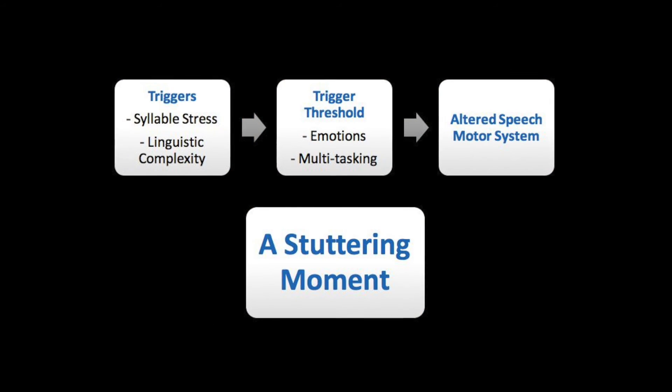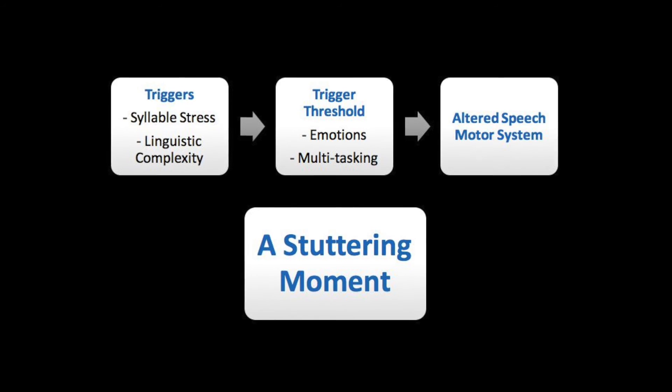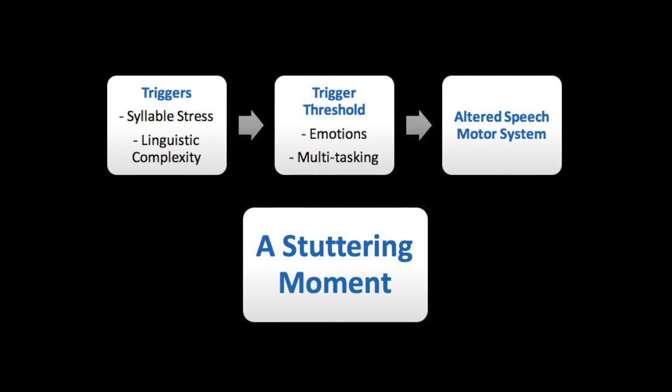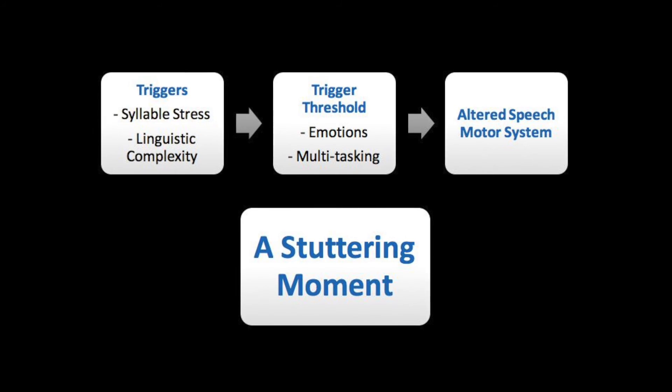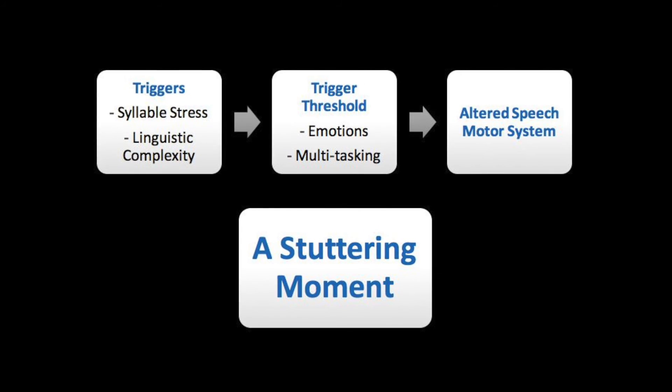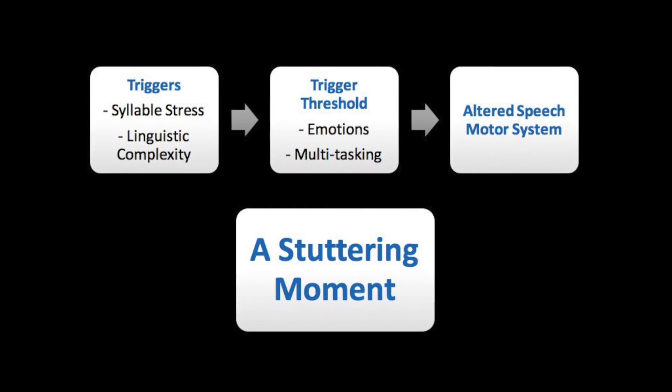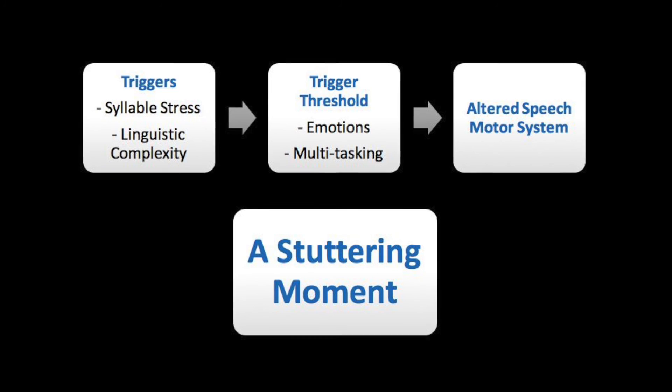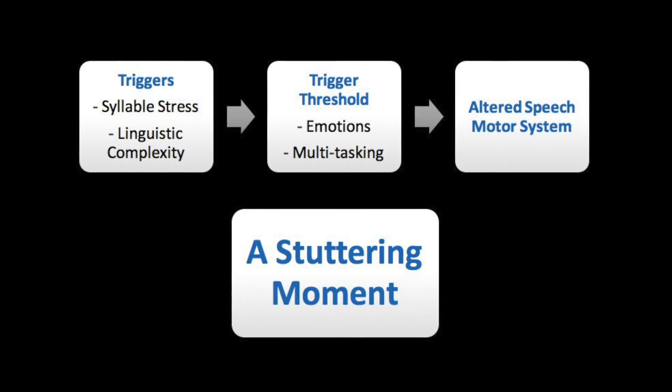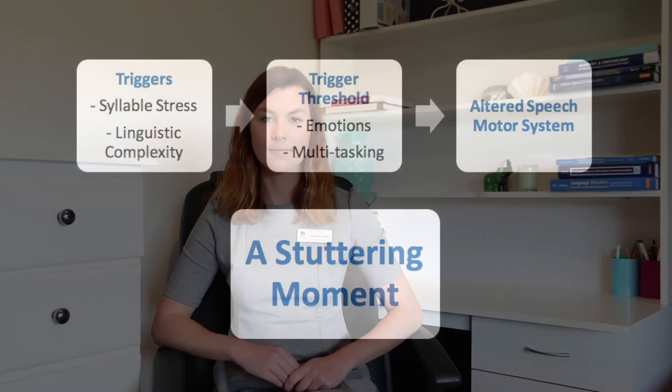To sum it all up, this model states that for a stuttering moment to occur, triggers in spoken language break through an individual's threshold. This threshold can be altered due to modulating factors, such as your current emotional state. Once broken through, these triggers disrupt the speech motor system, resulting in a moment of stuttering. Remember, this is just one of many theories aiming to describe the cause of stuttering. If you would like to find out more, you can talk to your speech-language pathologist. Thank you for taking the time to watch this presentation. I hope it has been interesting and informative for you.